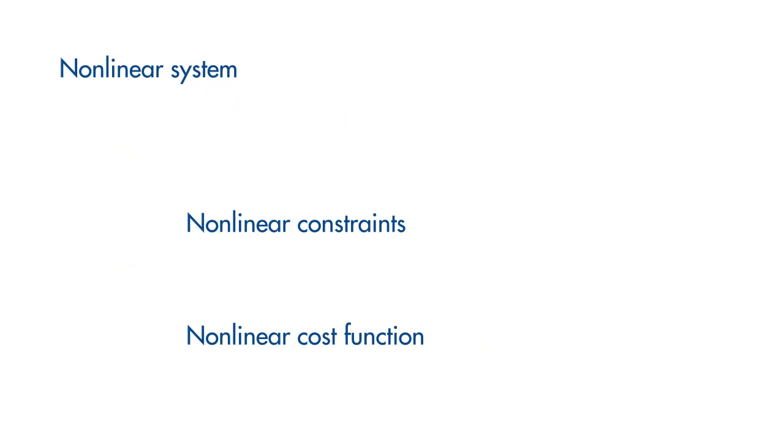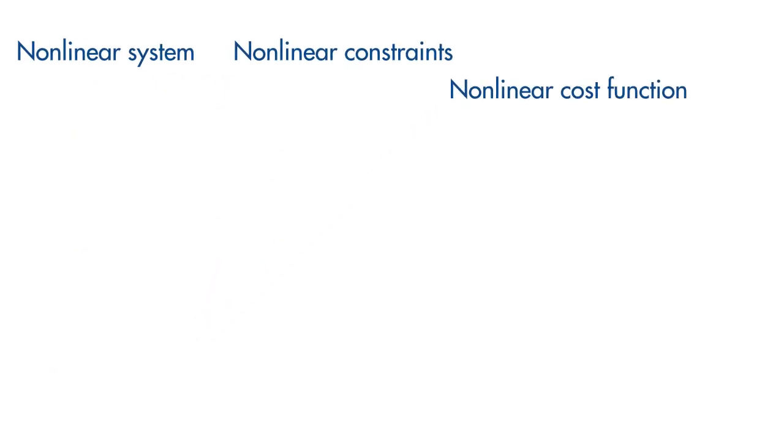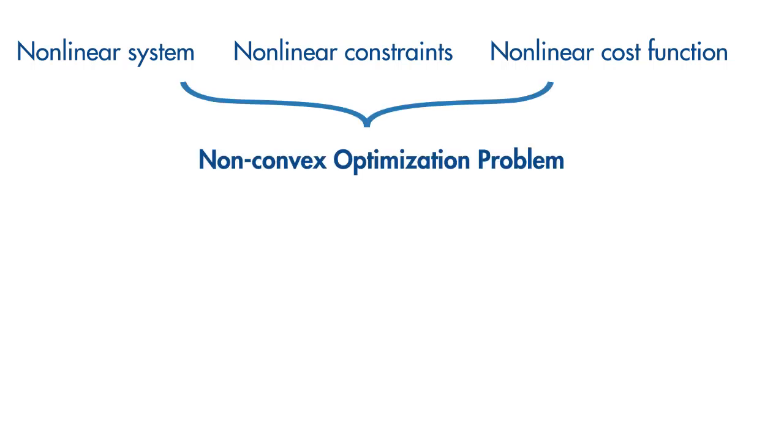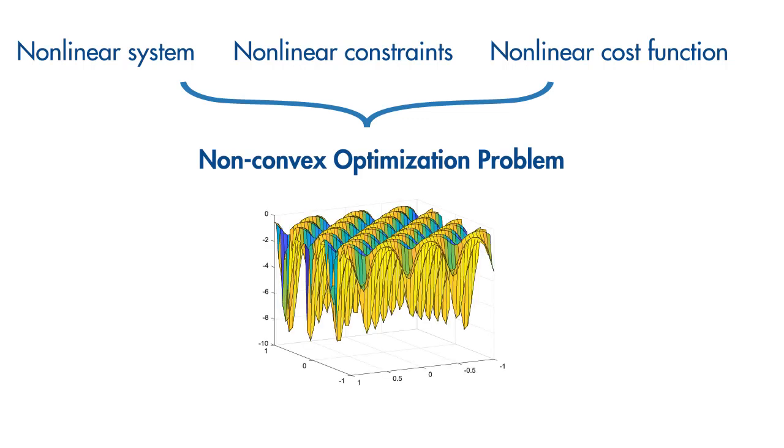However, it is also the most challenging one to solve in real-time, because when you have nonlinear constraints and a nonlinear cost function, the optimization problem becomes non-convex. The cost function may have multiple local optima, and finding the global optimum may be hard. The efficiency of solving the non-convex optimization problem that requires a large number of computations depends on the nonlinear solver you have.